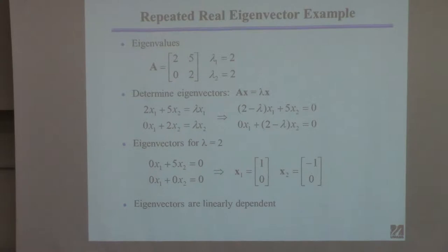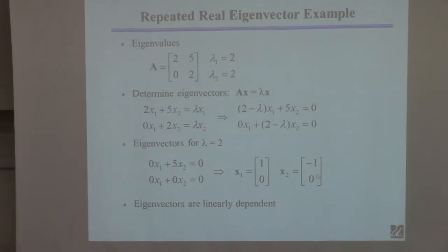The problem with these two eigenvectors — well, it's not a problem so far, but it will be later — is that they're linearly dependent. If you take this one times minus 1, you get the other one. If you have repeated eigenvalues, you get linearly dependent eigenvectors; nothing you can do about it.